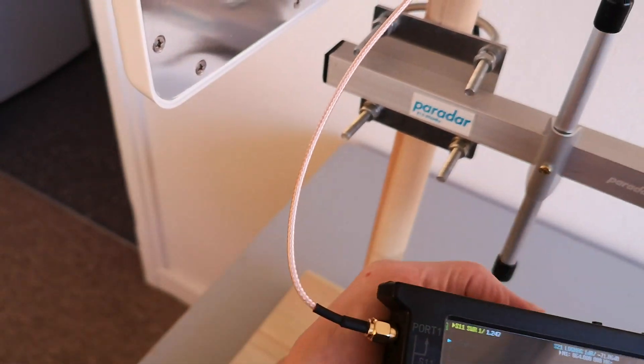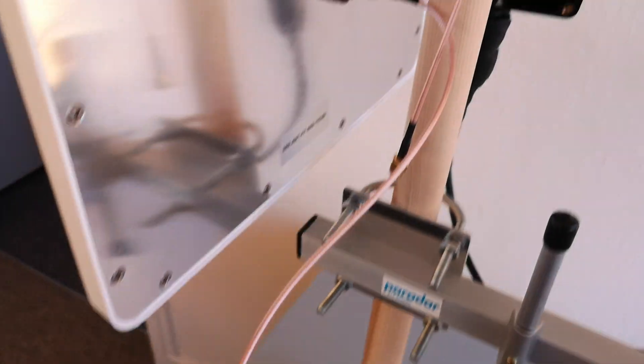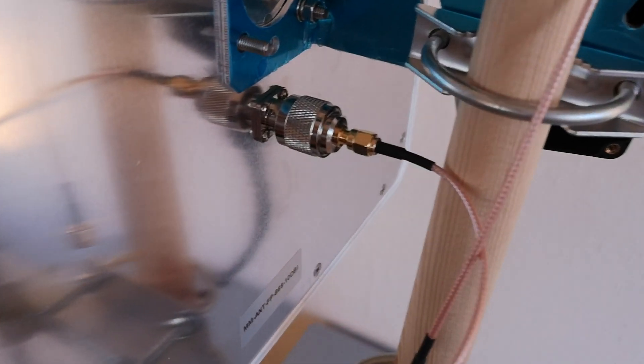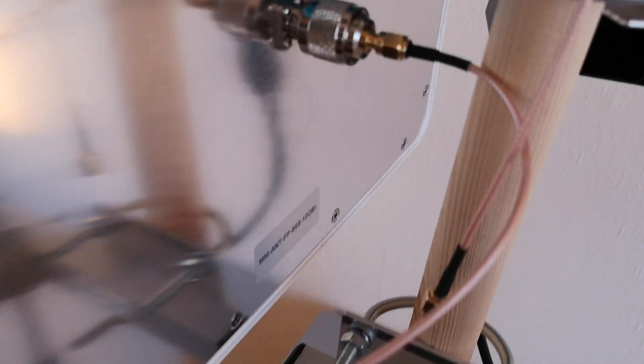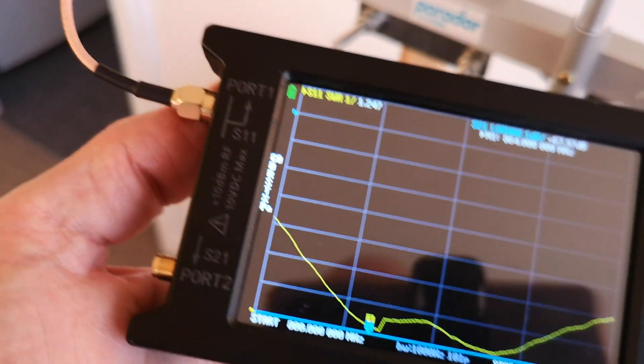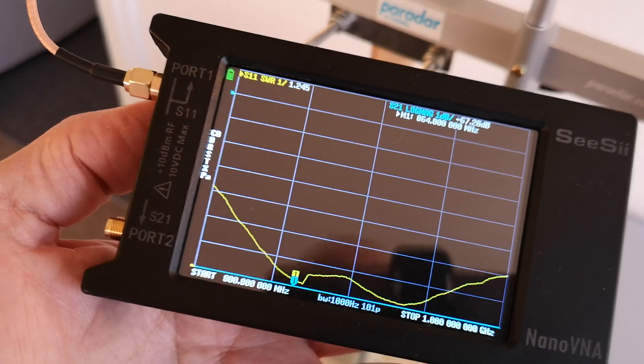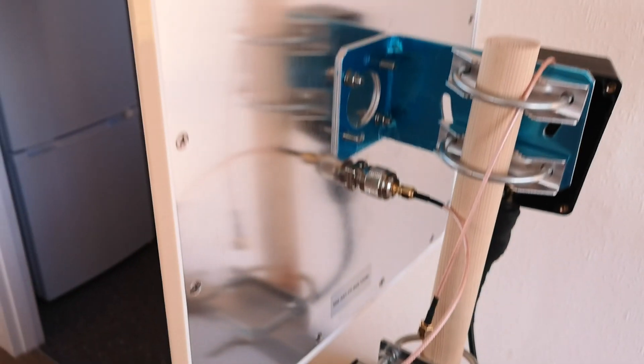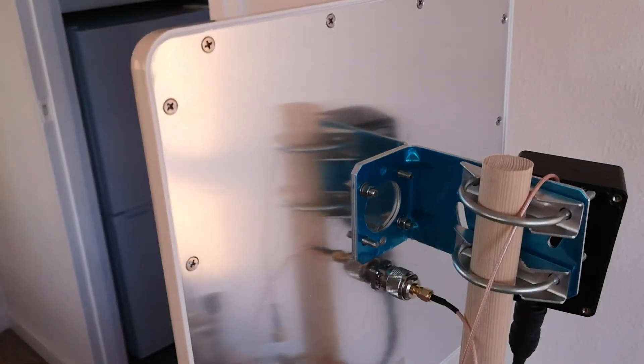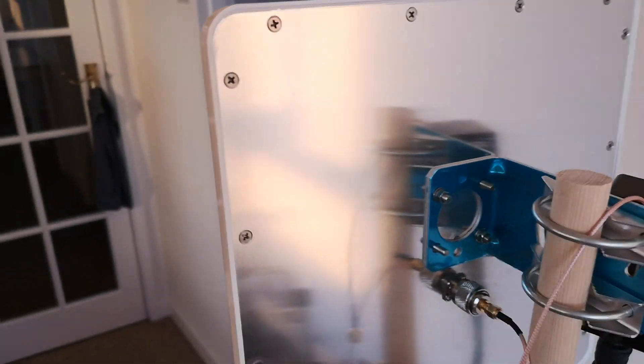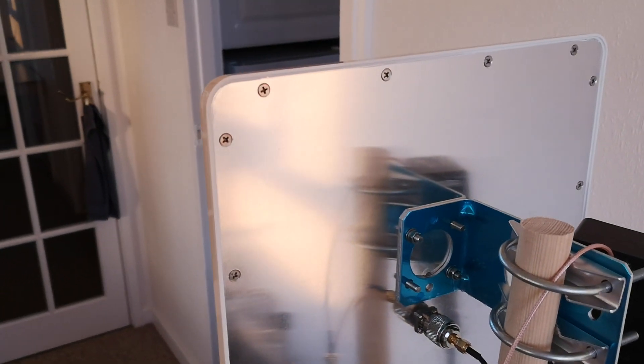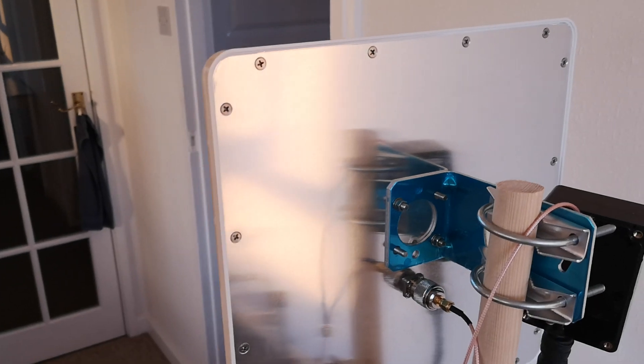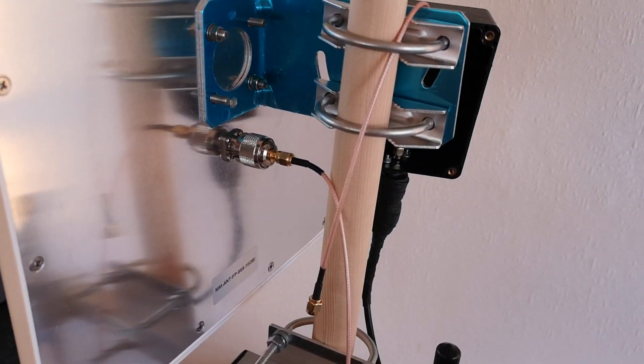I thought it might have been the coax or the adapters. I've seen things like that before. So I actually did plug the analyzer directly into this adapter without the coax, and it was still there. So that's something else. I wonder if anybody's going to x-ray one of these antennas. I'd love to see what's inside it.